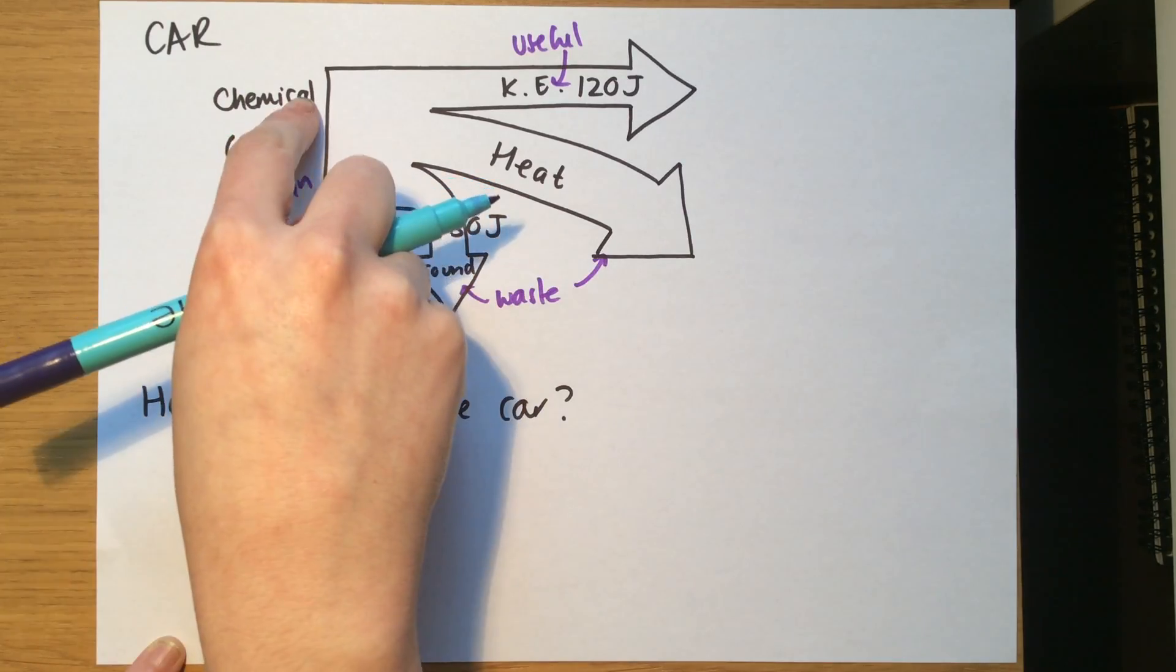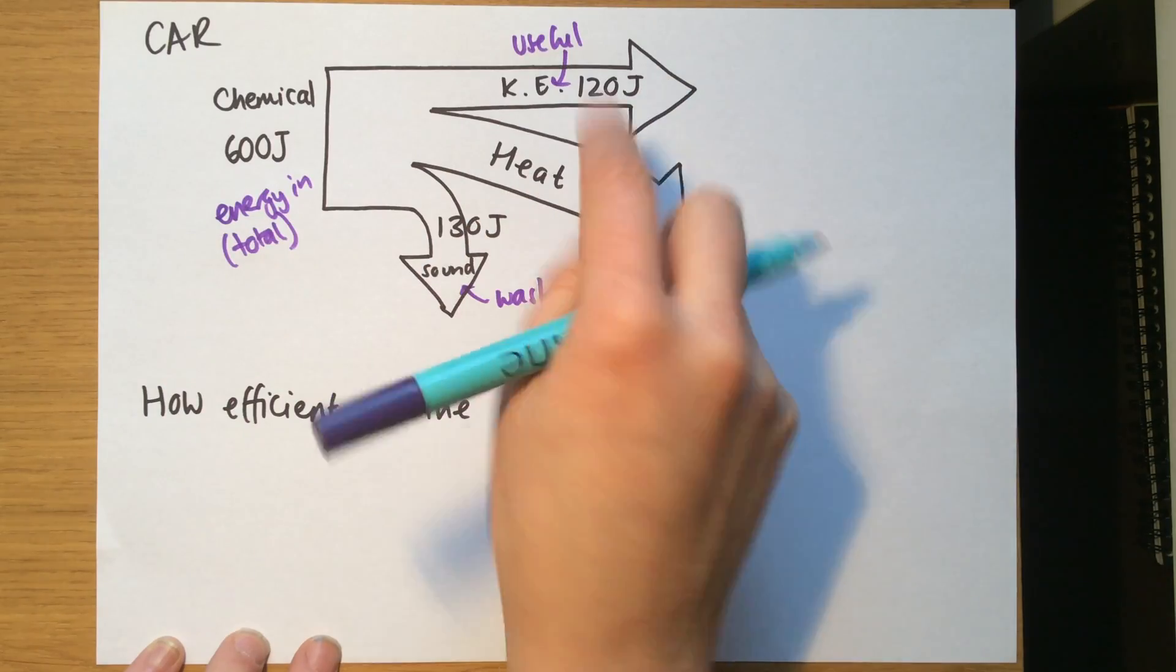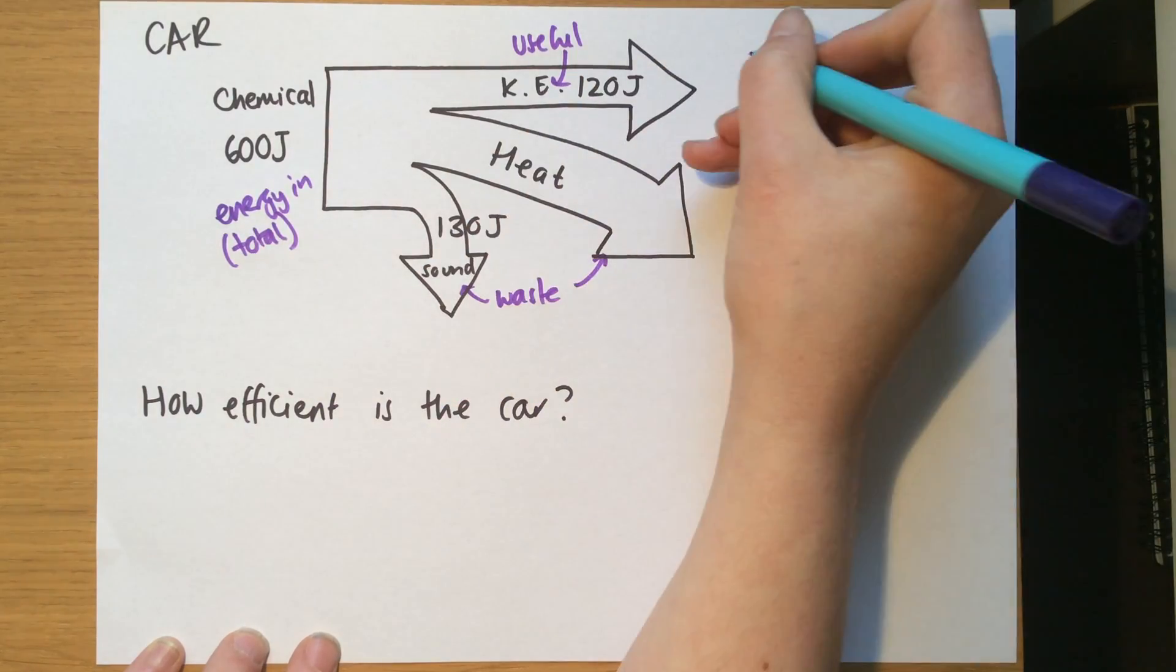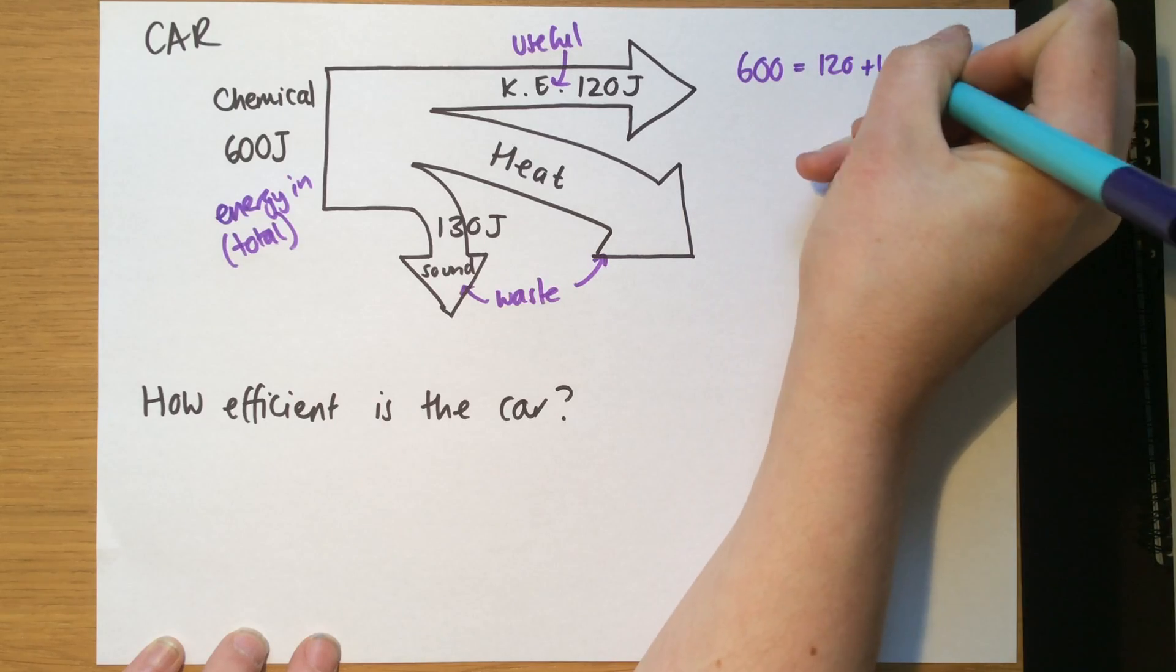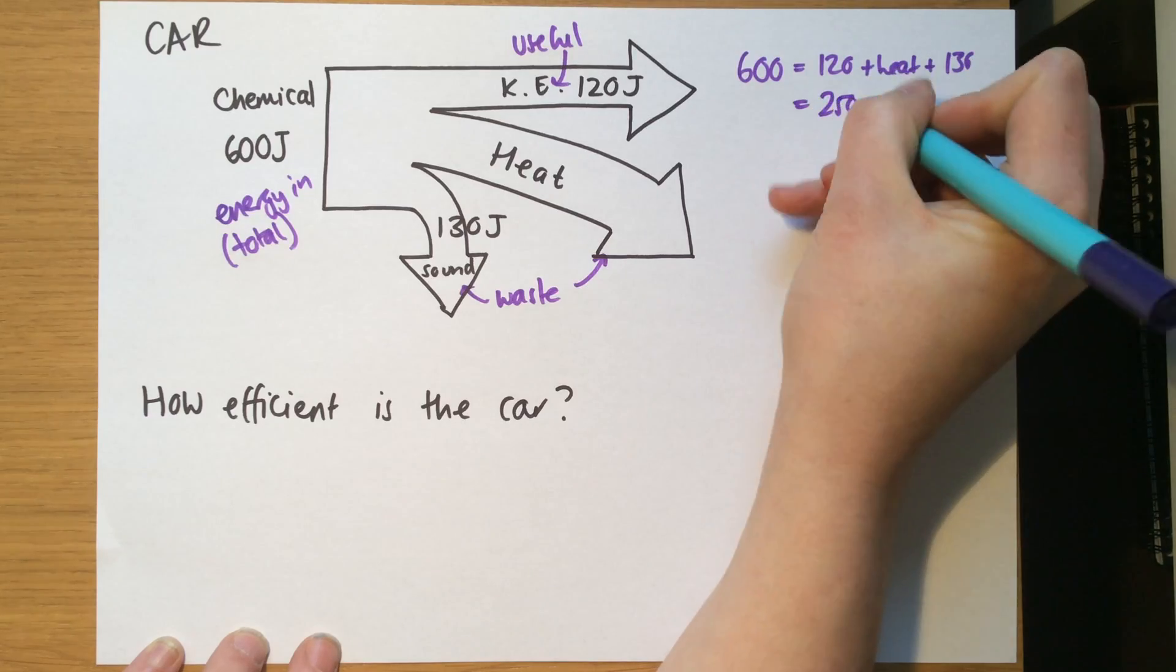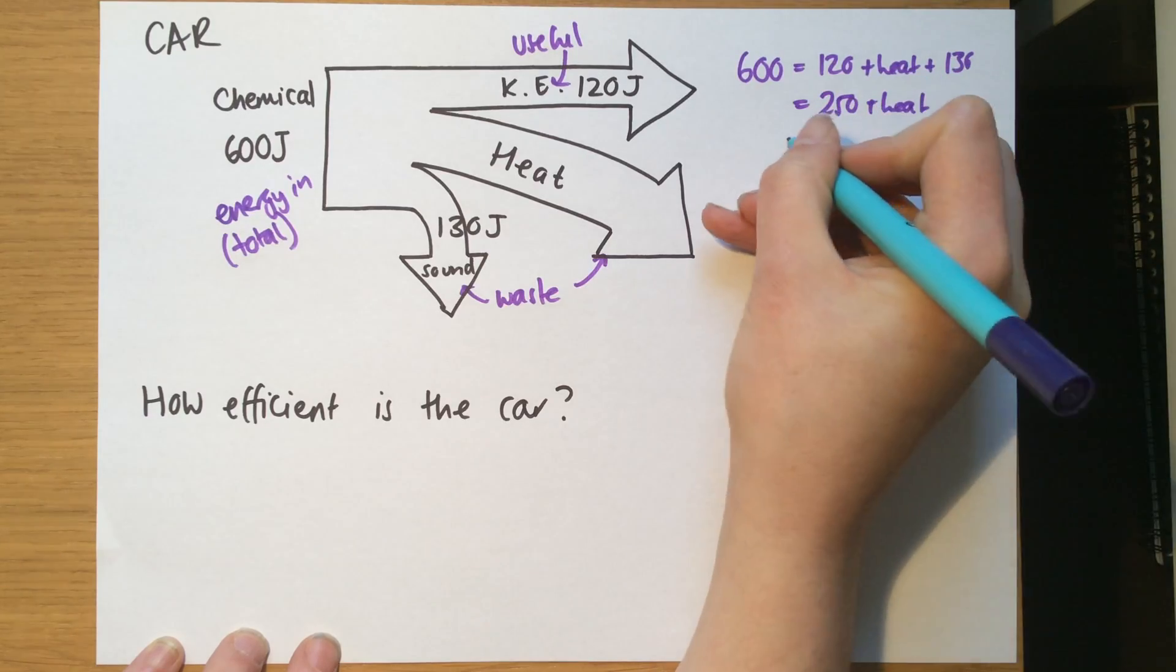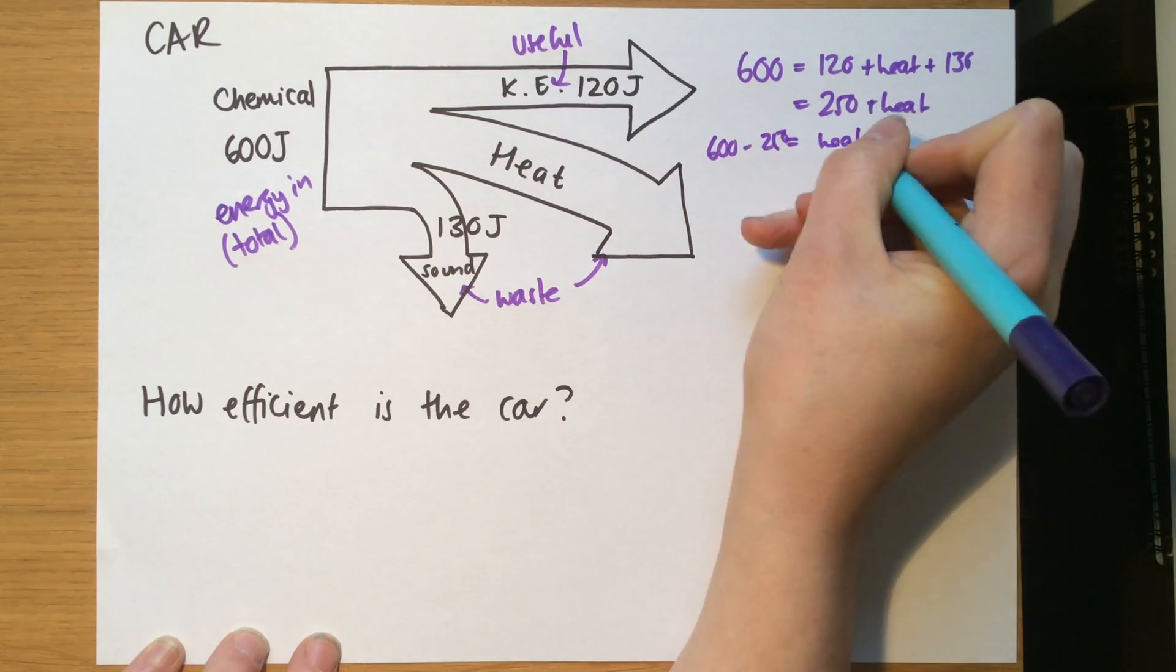Now the total energy in can't disappear, so 600 joules has got to equal 120 plus 130 plus whatever this is. So you can work out what the heat must be. 600 equals 120 plus heat plus 130, which is equal to 250 plus heat.